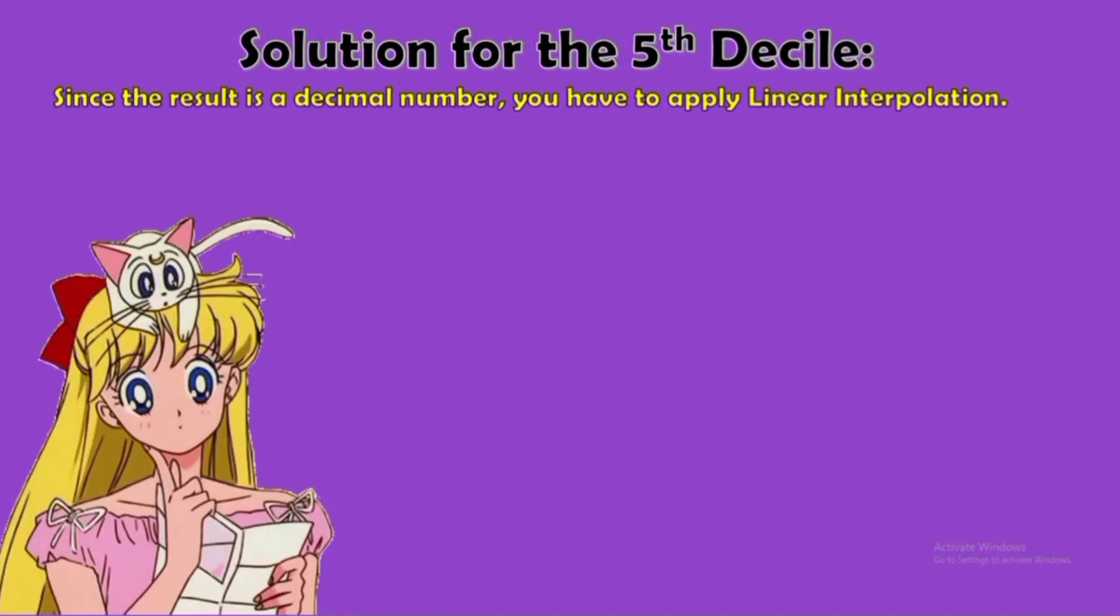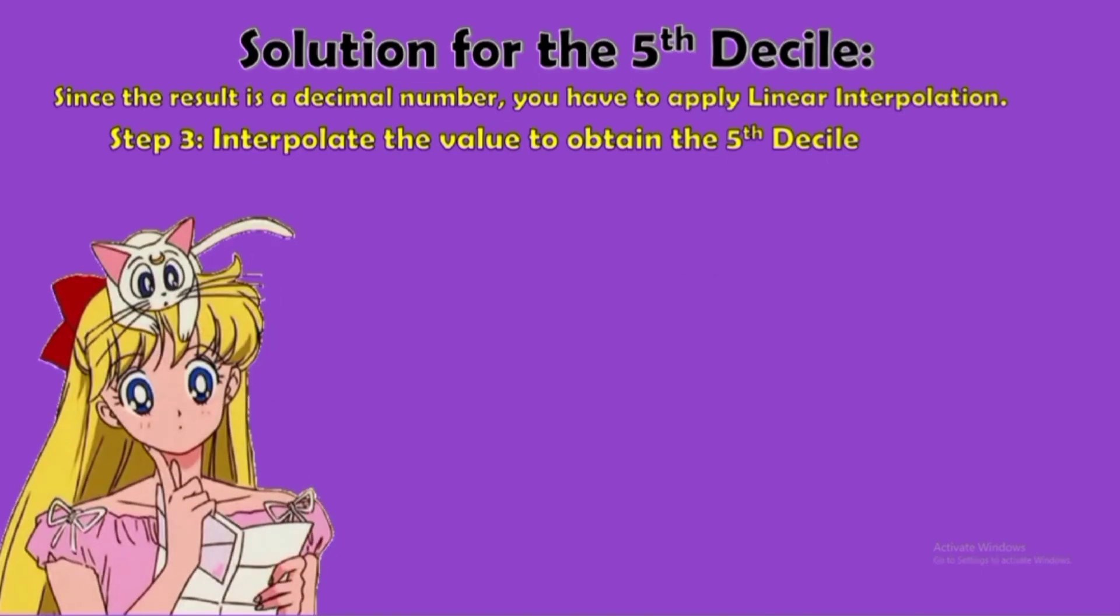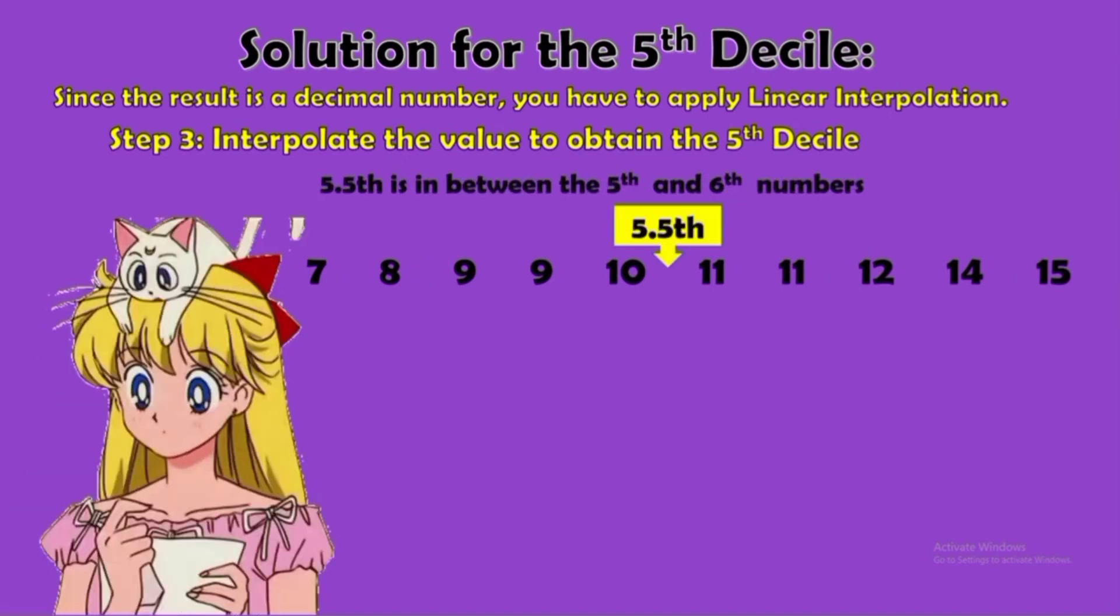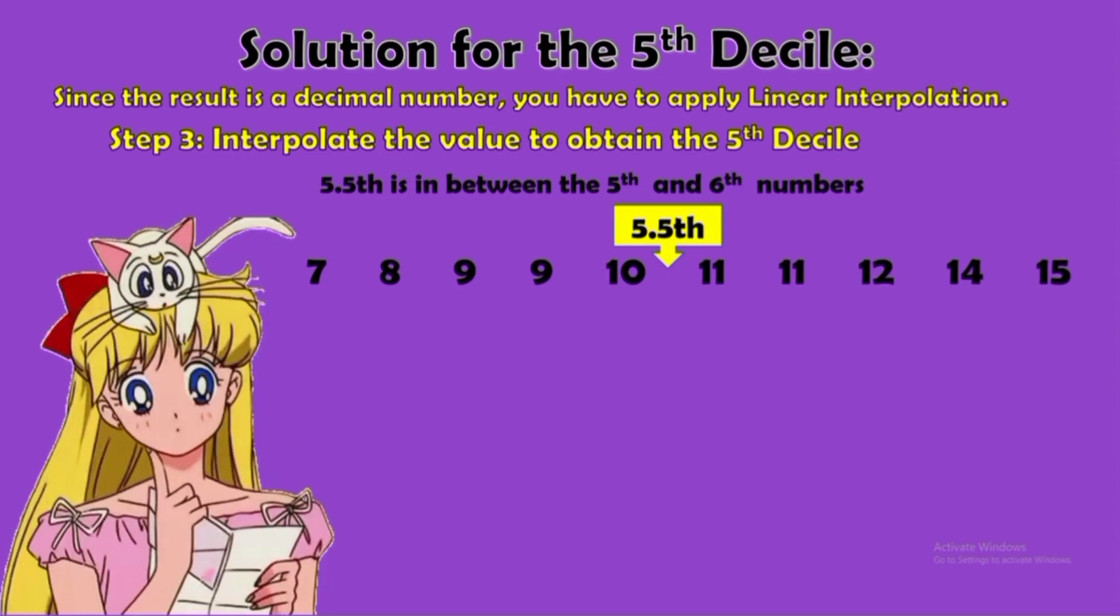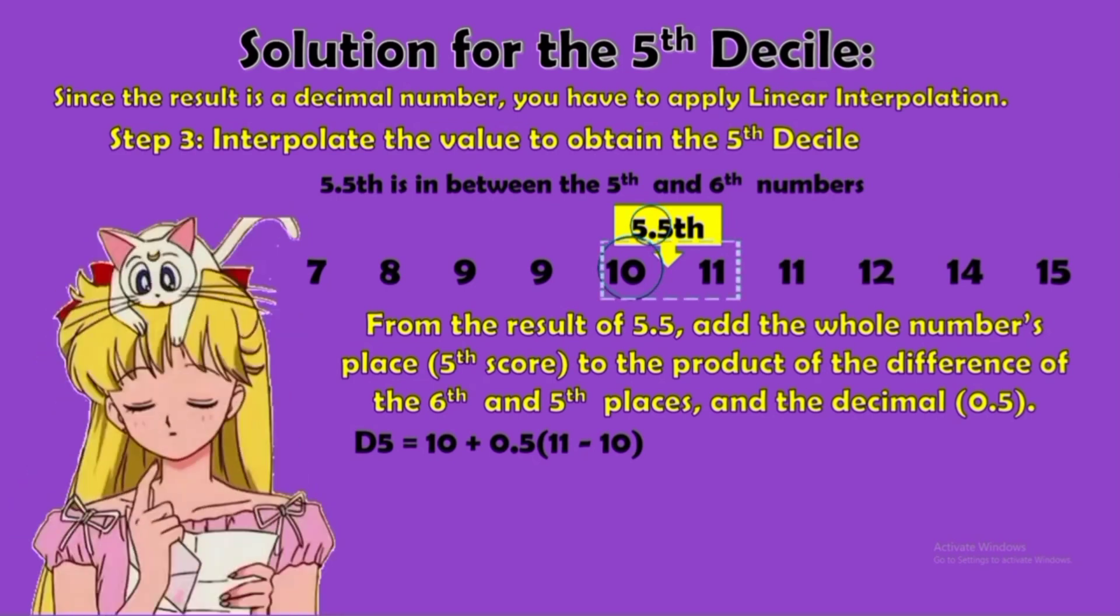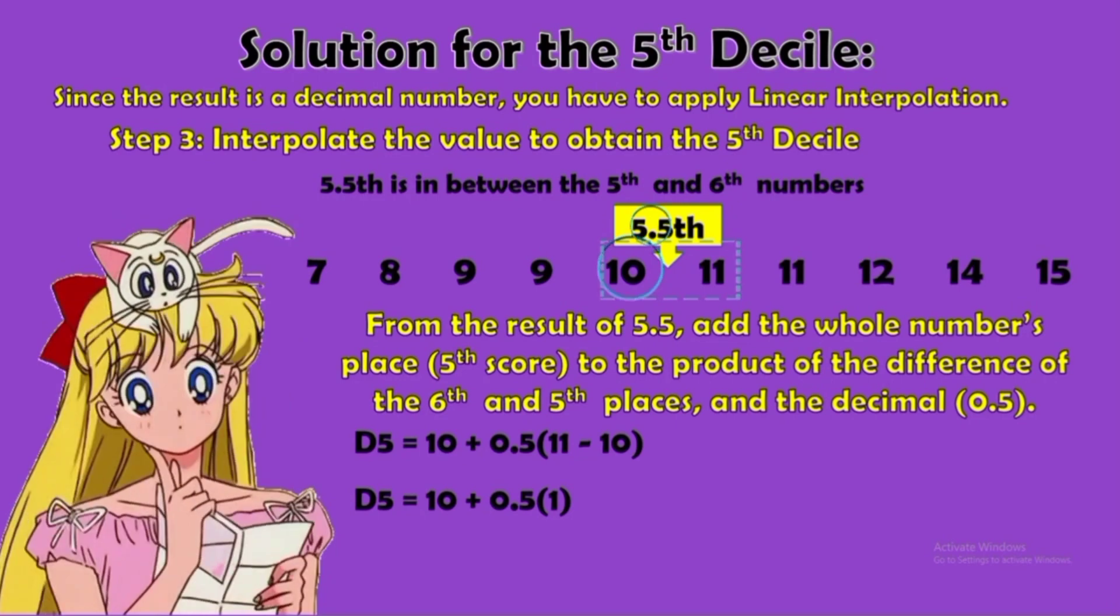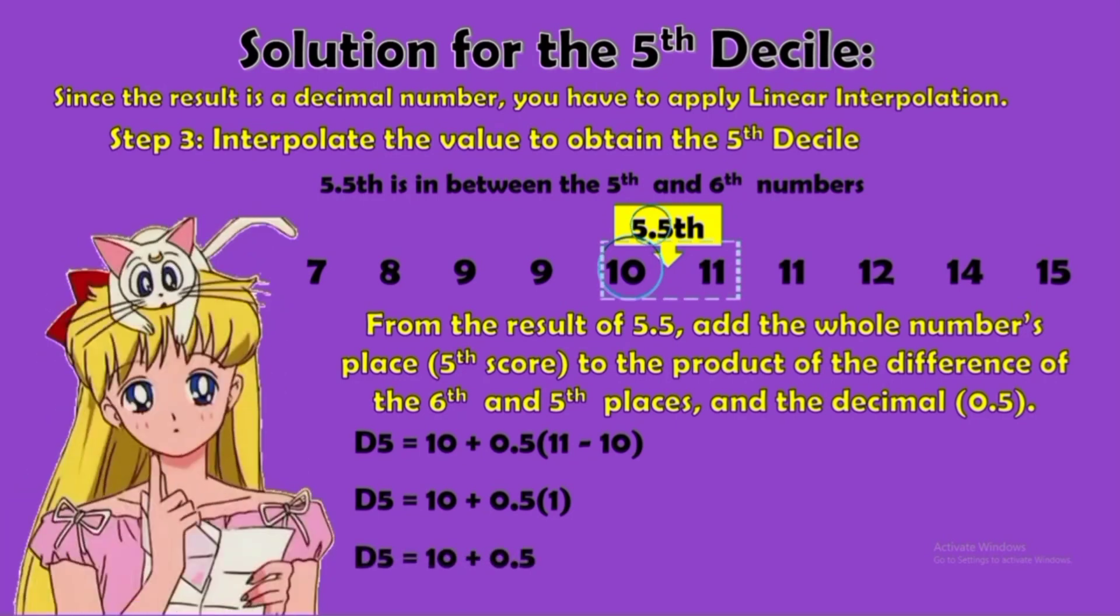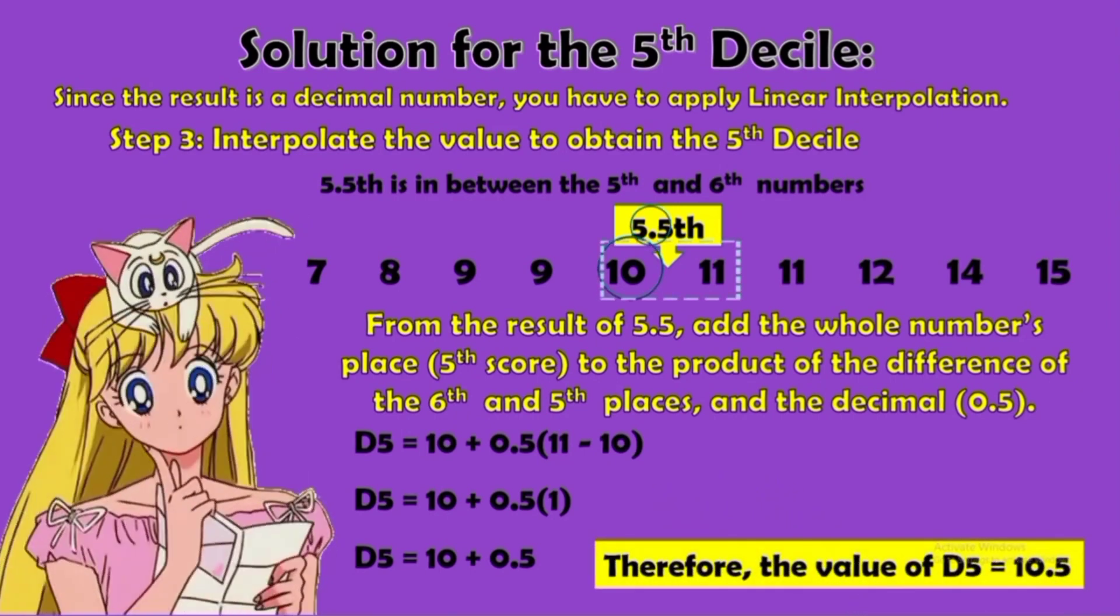Since the result is a decimal number, you have to apply linear interpolation. For step 3, interpolate the value to obtain the fifth decile. Again, we will use the same position in our given data. Here is our 5.5th place. It is in between the fifth and the sixth number: 10 and 11. From the result of 5.5, add the whole numbers place or the fifth score to the product of the difference of the sixth and the fifth places and the decimal number, which is 0.5. First, subtract 11 and 10. That is 1. And multiply we have 0.5. Lastly, add. Therefore, the value of the fifth decile is 10.5.